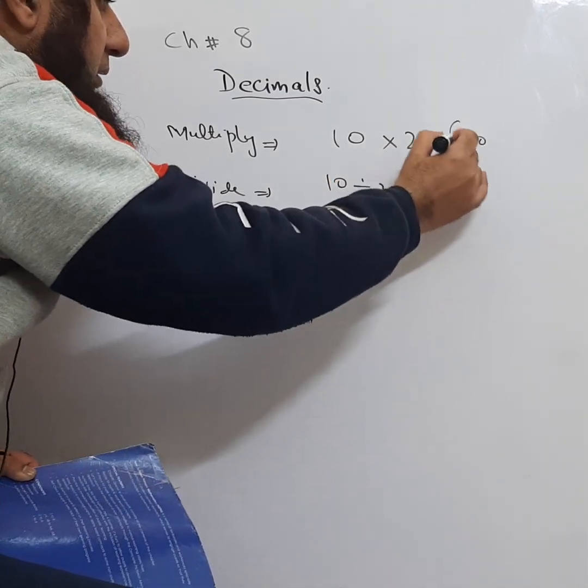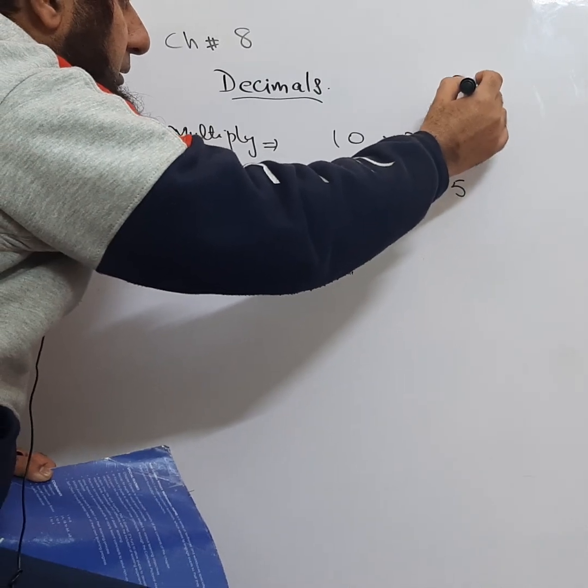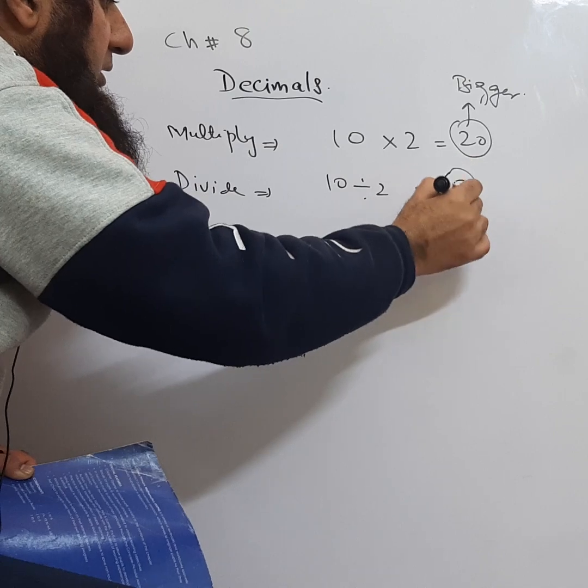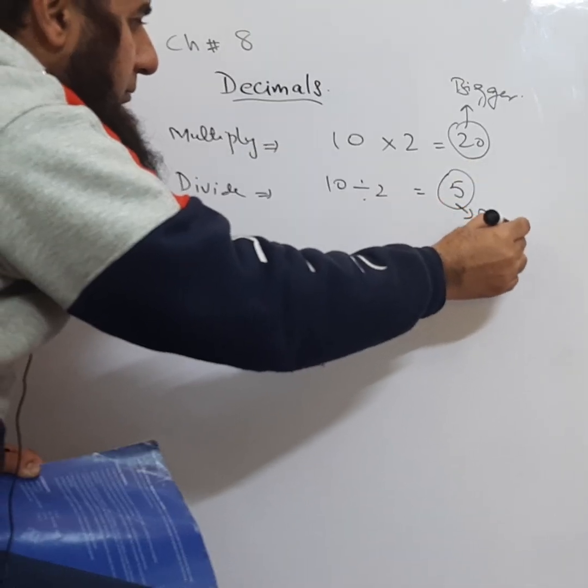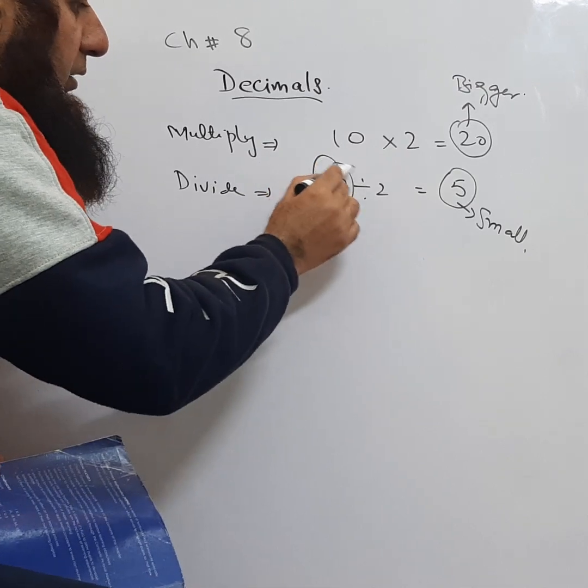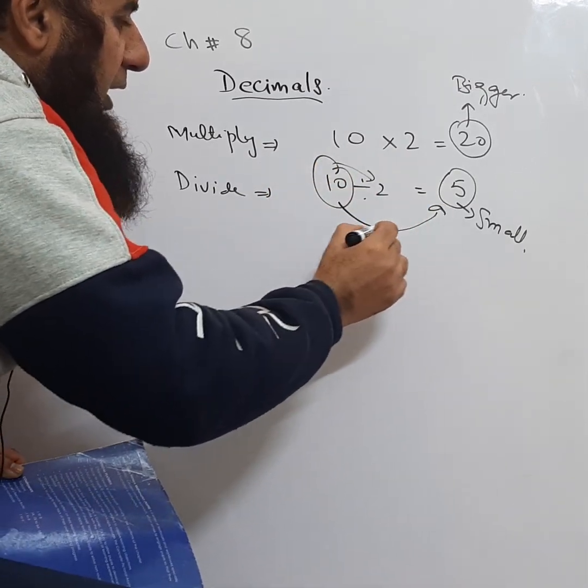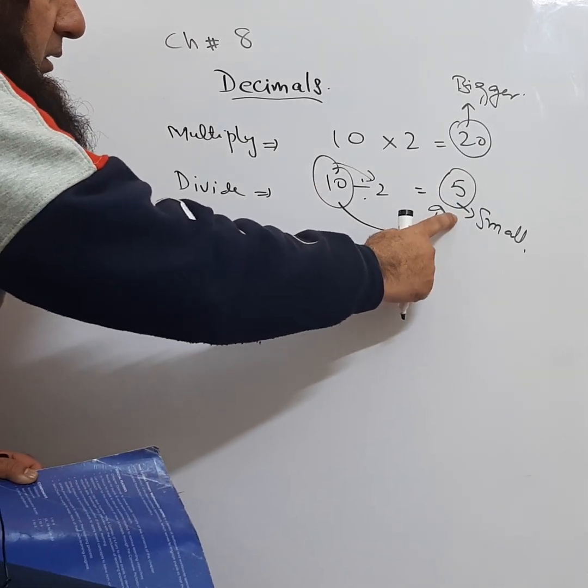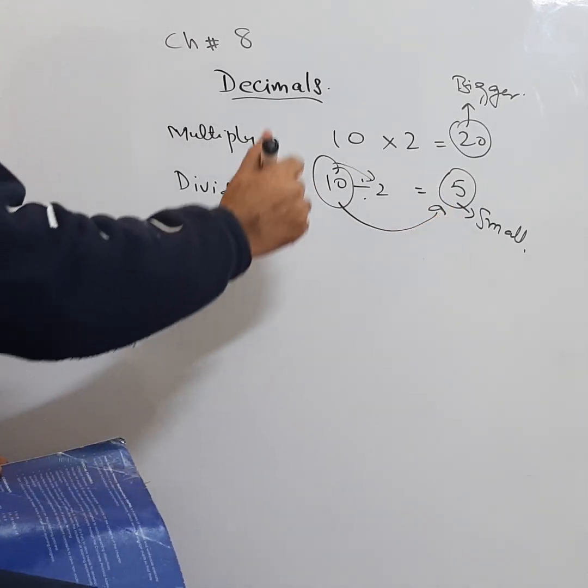Here the number is bigger, the answer is bigger. Here it is small. It was originally 10. When we divided it by 2, it became 5, so this number became smaller. The result is small.